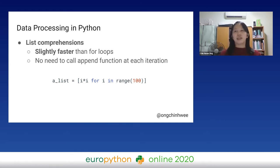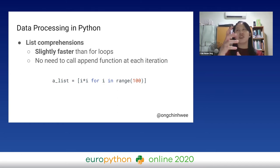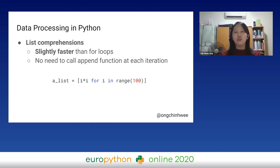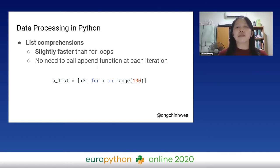Why not list comprehensions? List comprehensions are slightly faster than for loops, because they are optimized for the Python interpreter — when the interpreter sees a list comprehension, it can identify repetitive patterns, so there is no need to call the append function at each iteration. This is in contrast to for loops, where it has to call the append function every time. List comprehensions are slightly better than for loops, but it may not be enough.